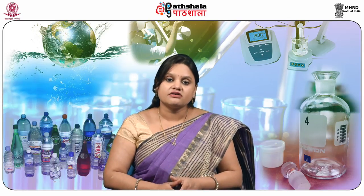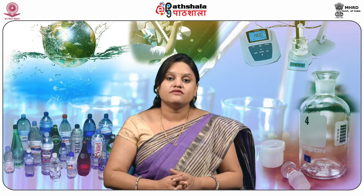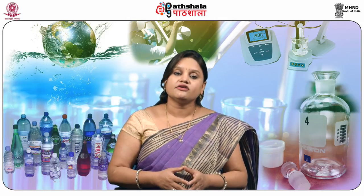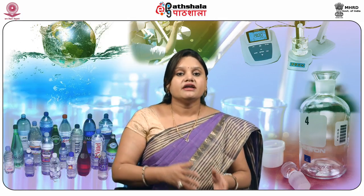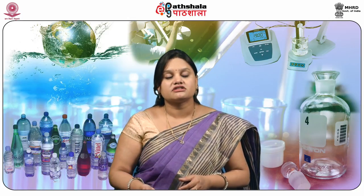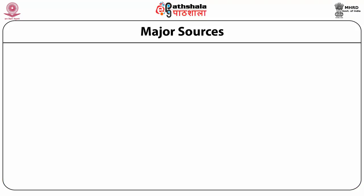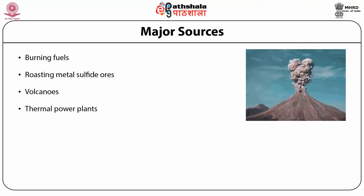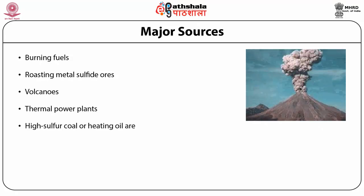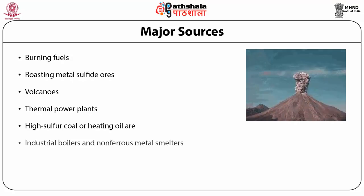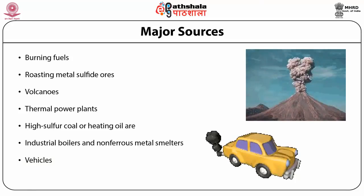Sulfur trioxide is another oxide of sulfur; it is either emitted directly into the atmosphere or produced from sulfur dioxide, and is rapidly converted to sulfuric acid. The major sources of sulfur dioxide into the atmosphere include burning of fuels, roasting metal sulfide ores, volcanoes, thermal power plants, high sulfur coal or heating oil, industrial boilers, non-ferrous metal smelters, and vehicular exhaust.